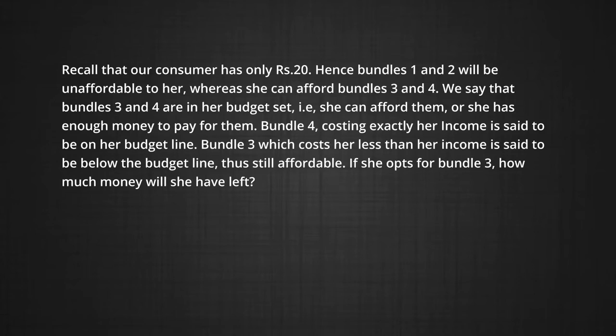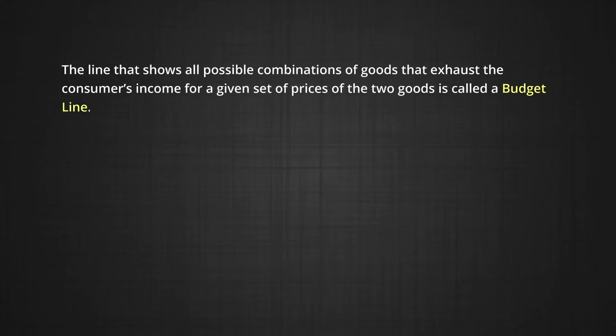She can afford them, or she has enough money to pay for them. Bundle 4 costs exactly her income and is said to be on her budget line. Bundle 3, which costs less than her income, is said to be lower than her budget line, but is still affordable. If she opts for bundle 3, how much money will she have left? Notice that she has rupees 7 left over. The line that shows all possible combinations of goods that exhaust the consumer's income for a given set of prices of the two goods is called a budget line.